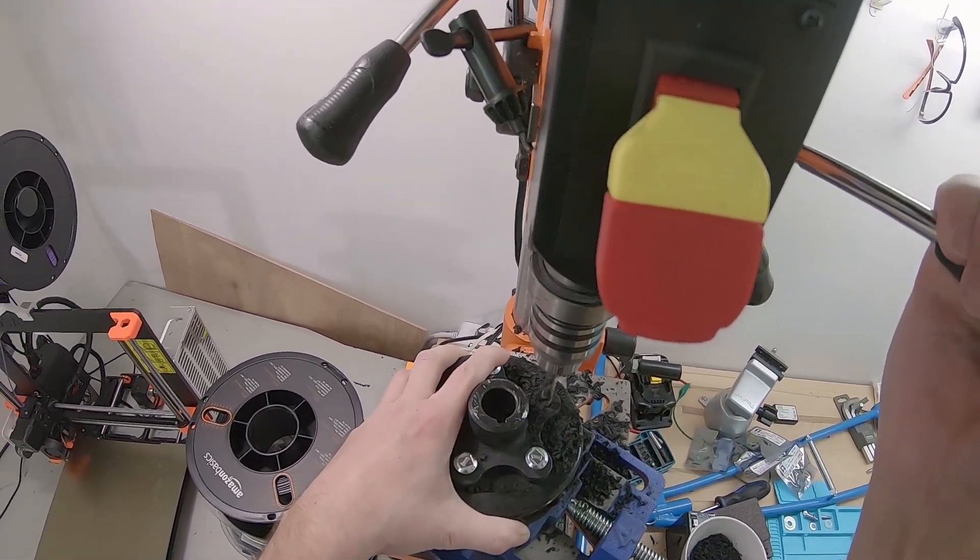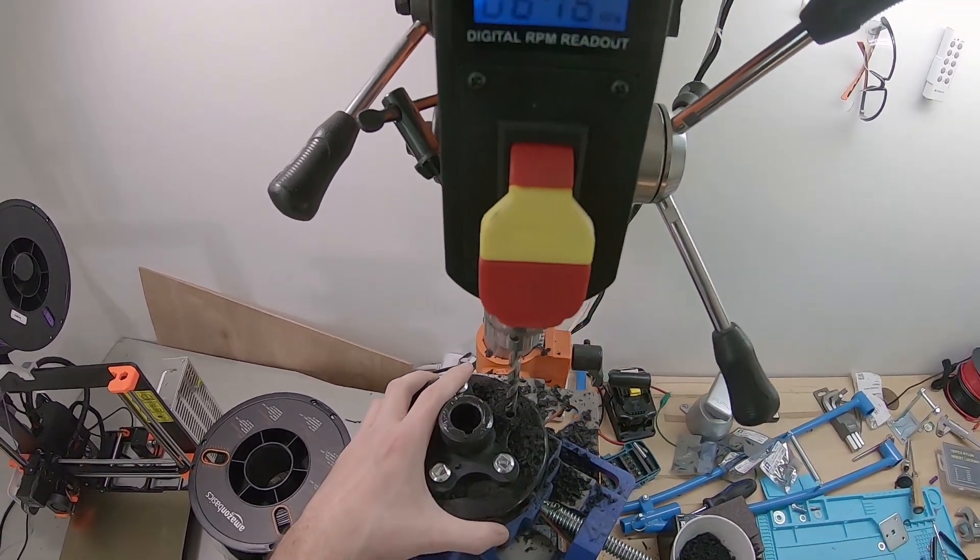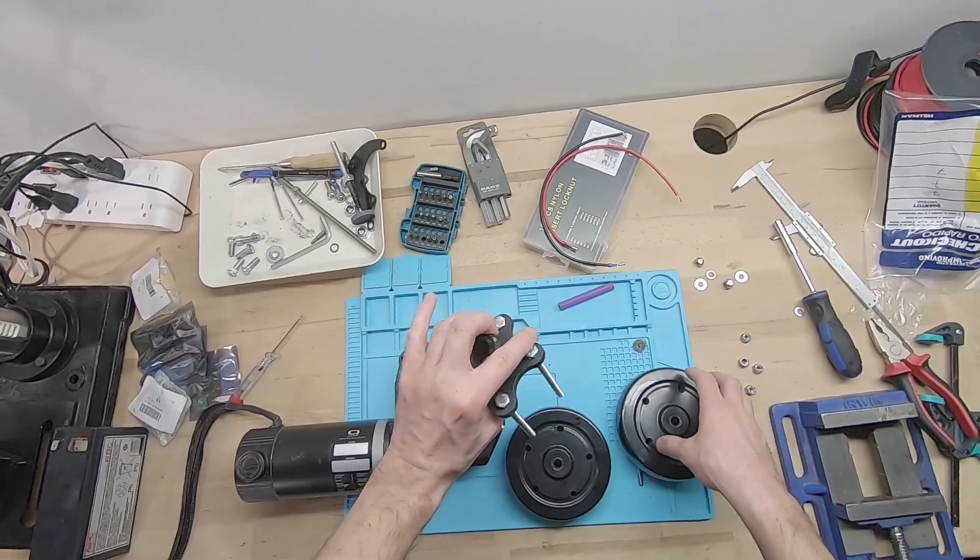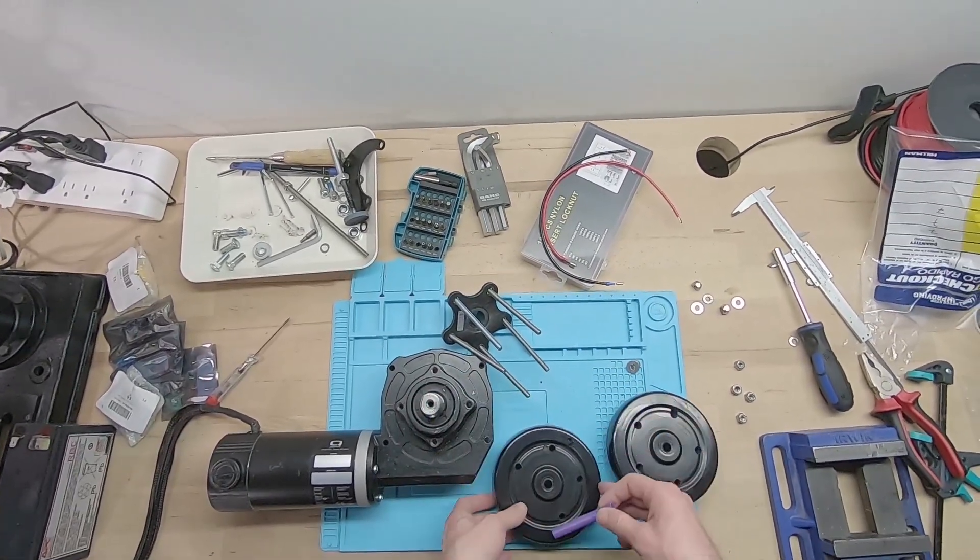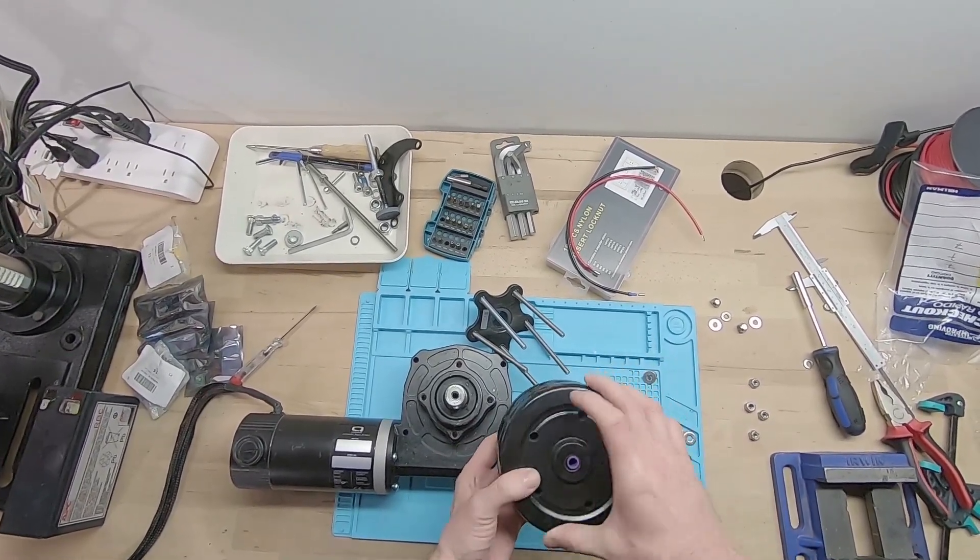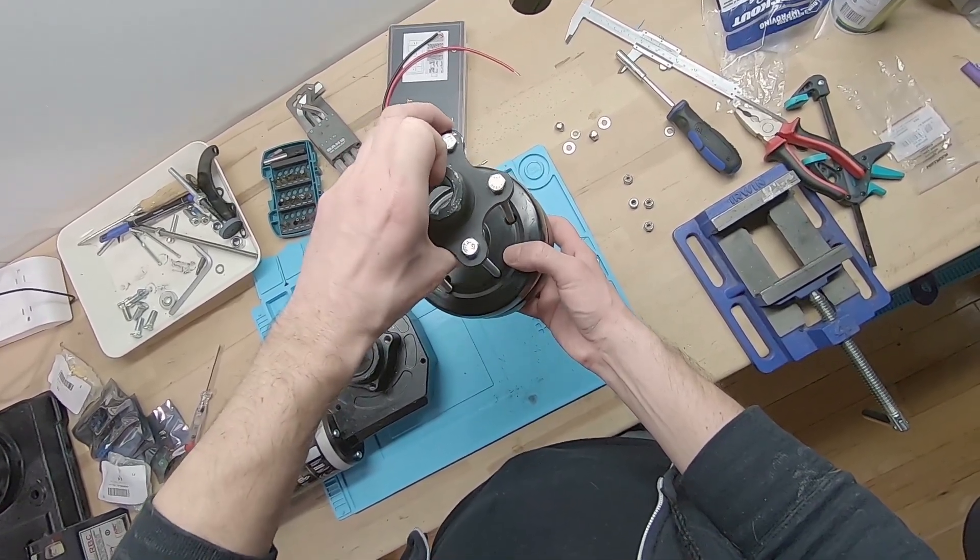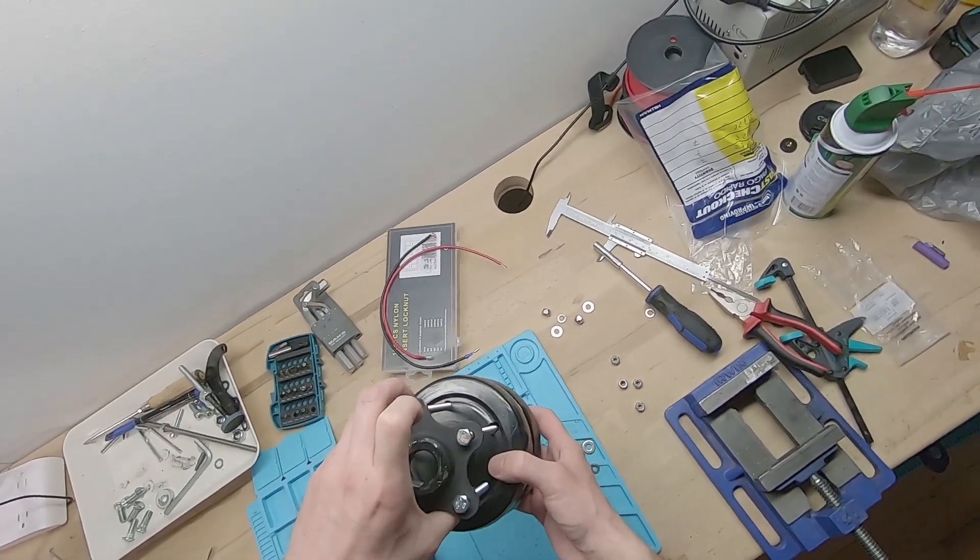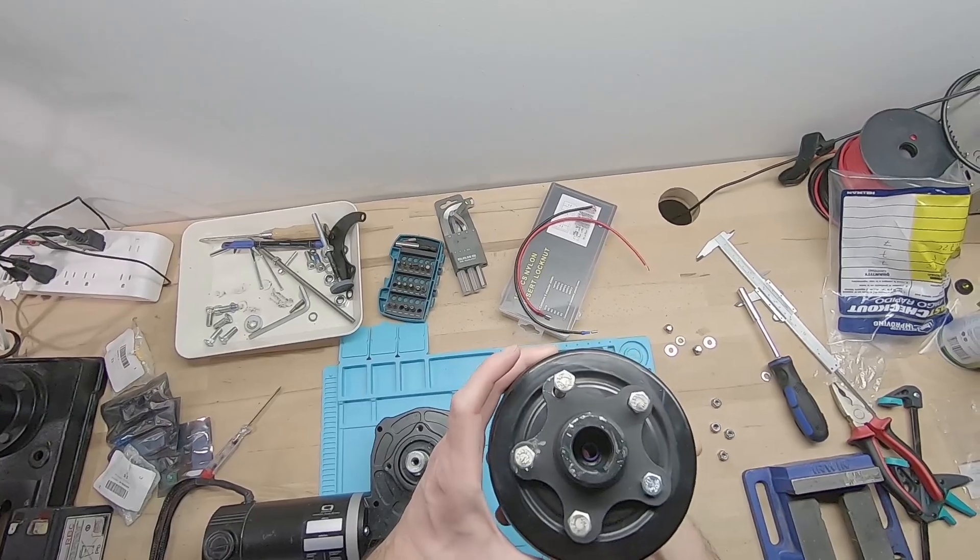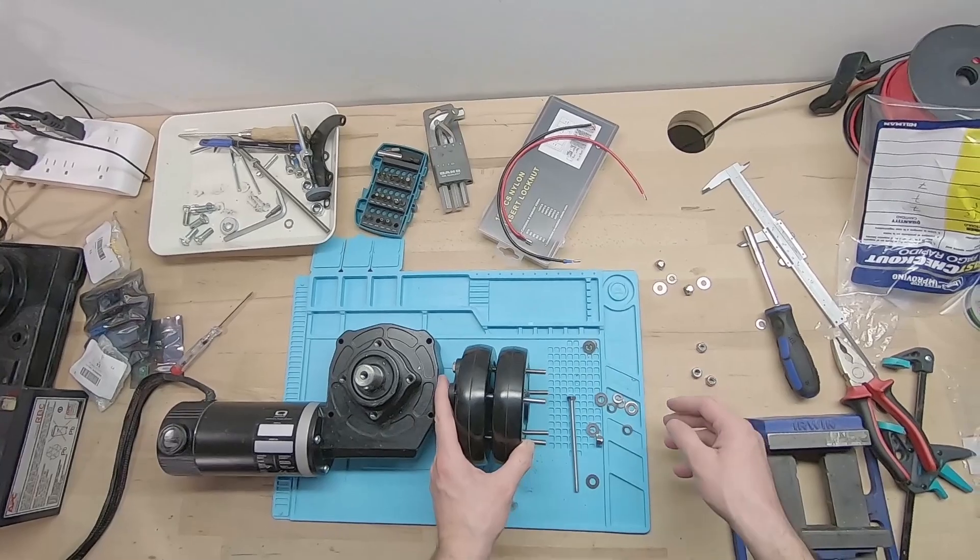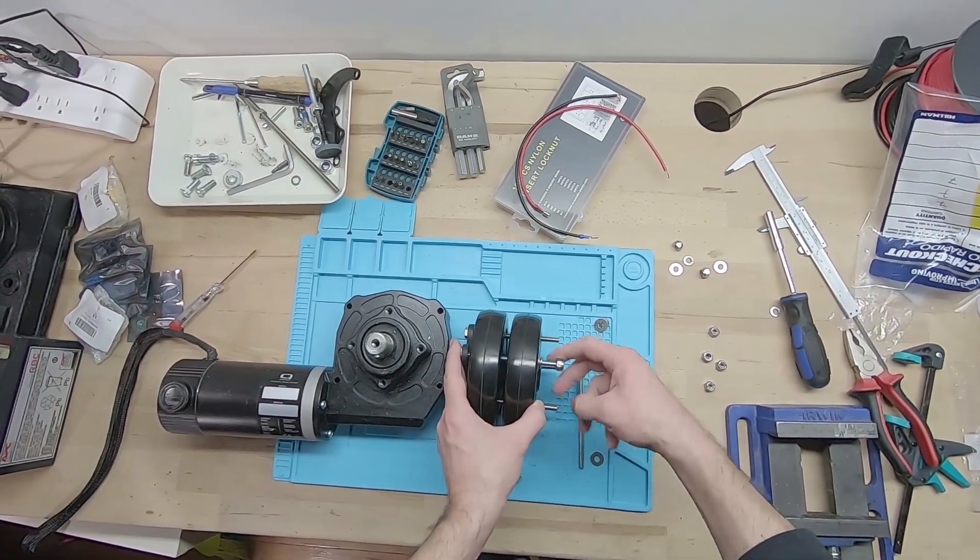I used the wheel mount as a guide to drill the holes. Next we need to attach the tires to the wheel mount. I inserted long bolts into the mount and then inserted them into the tires.